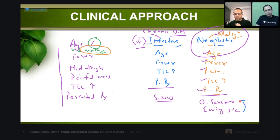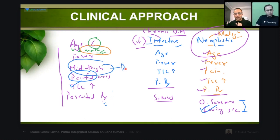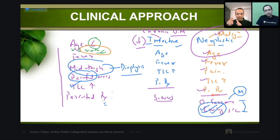A painful mass — pain is clinching the diagnosis of Ewing's. Ewing's is classically painful. Fever and raised TLC point to Ewing's, because Ewing's mimics infection, which is well known. Periosteal reaction could be there in both. But the site — mid-thigh means diaphysis. Osteosarcoma is metaphyseal, but Ewing's is diaphyseal. Three tick marks for Ewing's going by the leads. My provisional diagnosis is Ewing's, but the final diagnosis is always by biopsy.